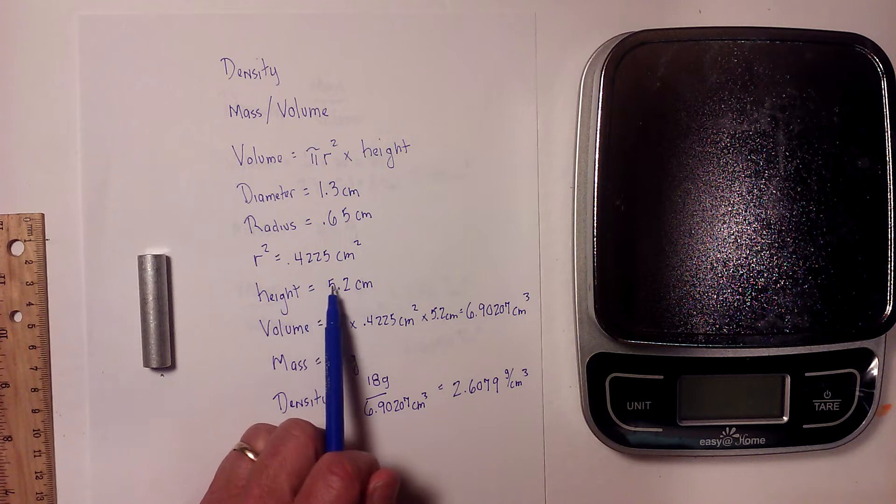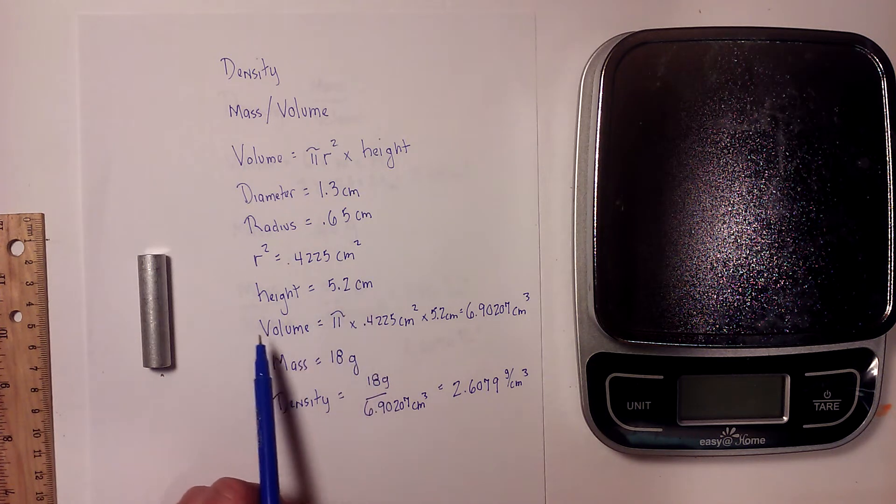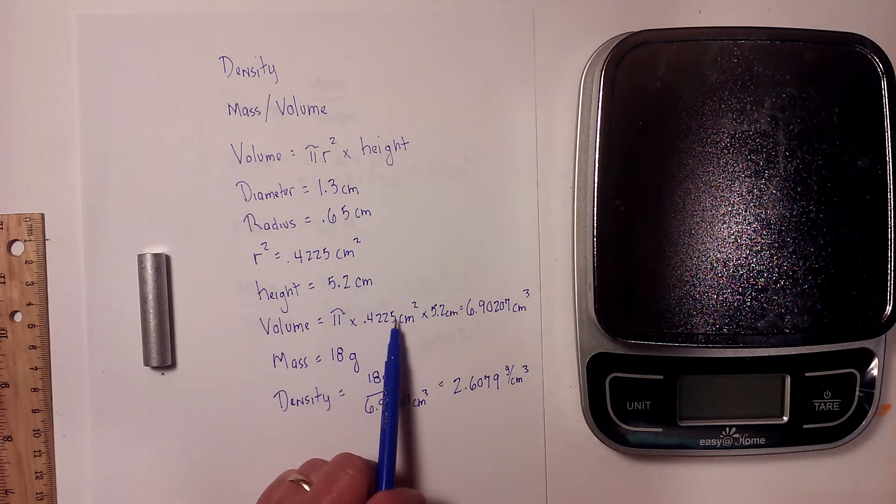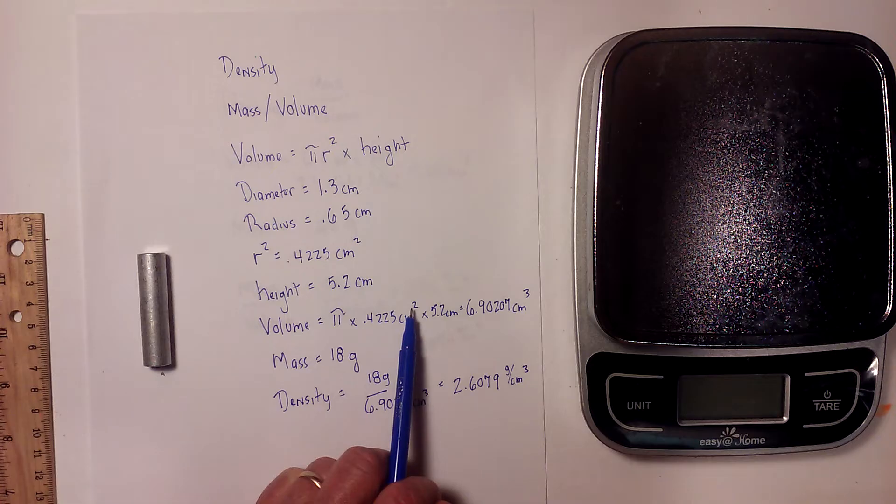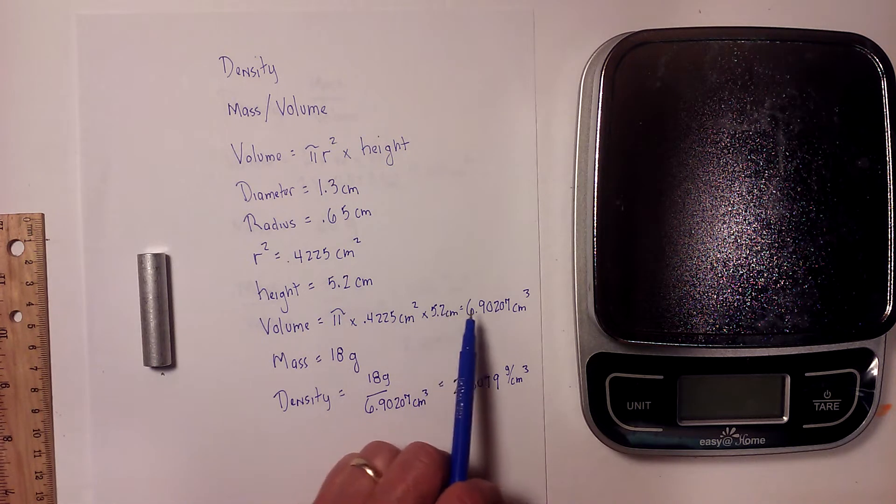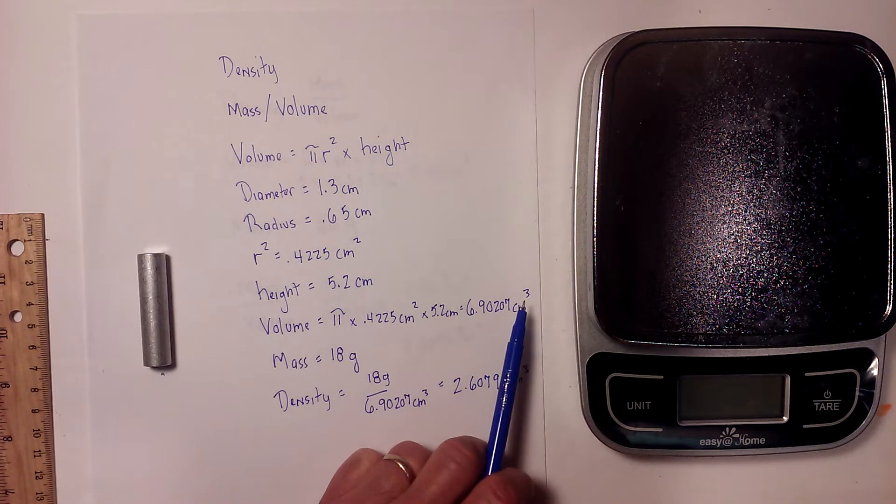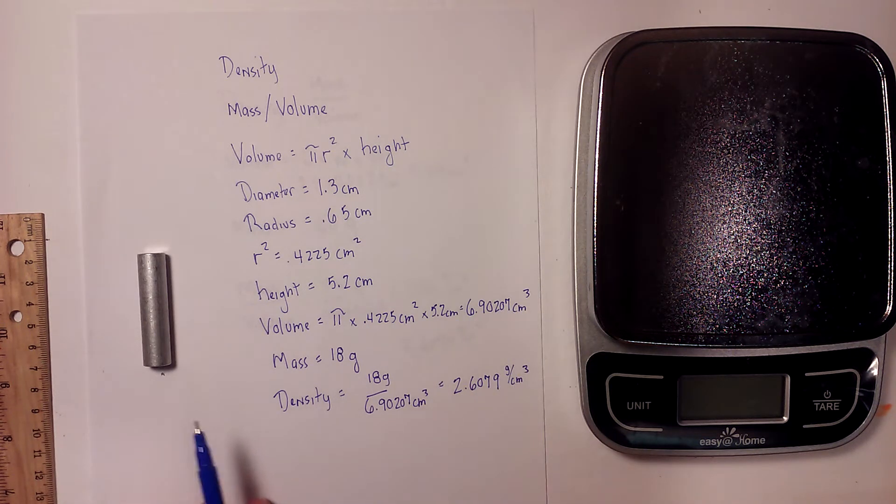So now to get the volume I just plug everything into the formula. I have pi times 0.4225 centimeters squared times 5.2 centimeters, and that equals 6.90207 centimeters cubed. Volume is cubed.